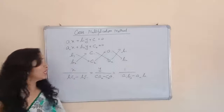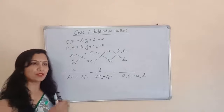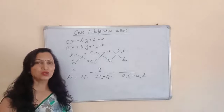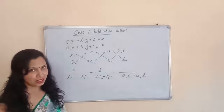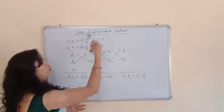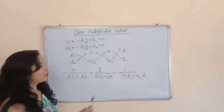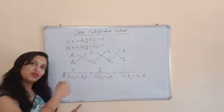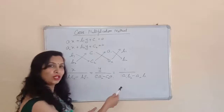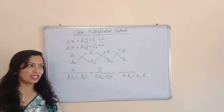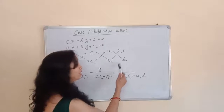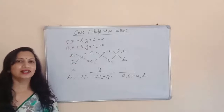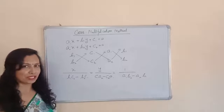One more thing: in most equations the form is ax + by = c, like 3x + 2y = 9. If the constants c1 and c2 are towards the RHS of the equation, then you will write minus 1 upon. If the constant values are towards the LHS, then you will write 1 upon. So based on where the constants are, you adjust the sign accordingly.